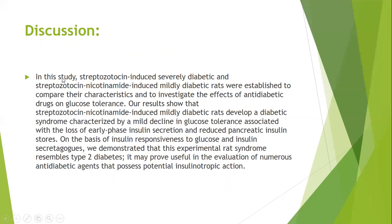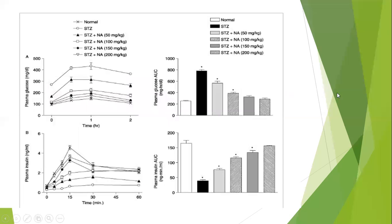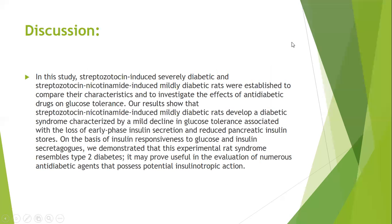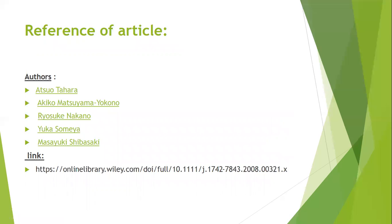In discussion: streptozotocin alone produces severely diabetic rats; with nicotinamide, mildly diabetic rats are produced. Results vary accordingly — insulin levels increase and glucose levels decrease. The best results were observed with glibenclamide, teneligliptin, and insulin, showing increased insulin levels at 15 minutes. Based on insulin responsiveness to glucose and insulin secretagogues, this experimental rat model resembles type 2 diabetes and may prove useful in evaluating anti-diabetic agents with potential insulinotropic action.